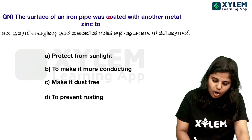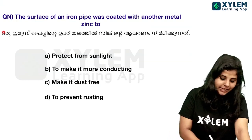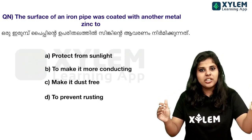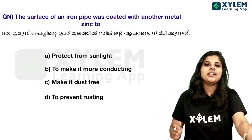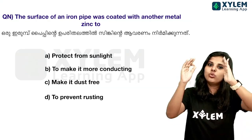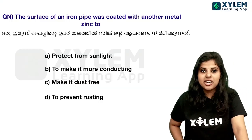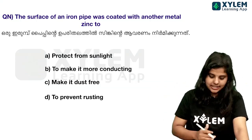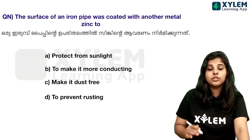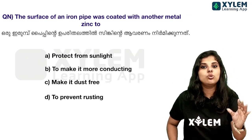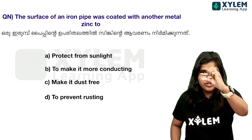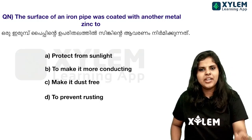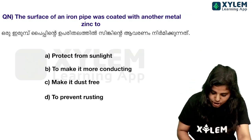Next question: The surface of an iron pipe was coated with another metal, zinc. Why? To prevent rusting. The options include: to protect from sunlight, to make it more conducting, and to prevent rusting. The correct answer is to prevent rusting.